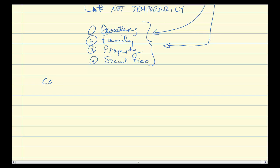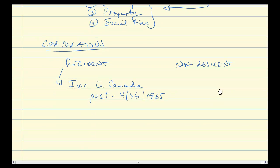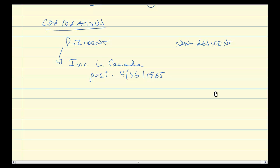As for corporations, the principle is exactly the same: we want to figure out if you are a resident corporation — meaning Canadian — or not. There isn't a part-year concept for corporations because a new fiscal year would begin, so the whole concept of part-year doesn't need to be there. And it's actually pretty clear: you are a resident Canadian corporation if you were incorporated in Canada post April 26, 1965. If you are, then end of story — you're a Canadian company subject to Canadian tax on your worldwide income.